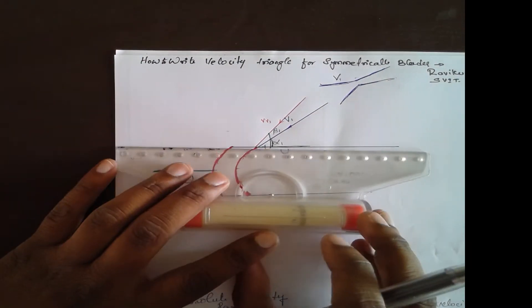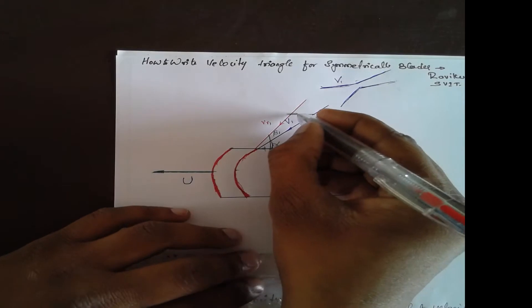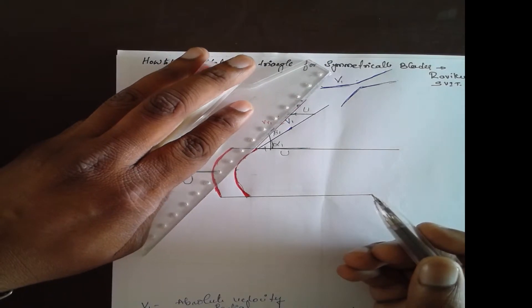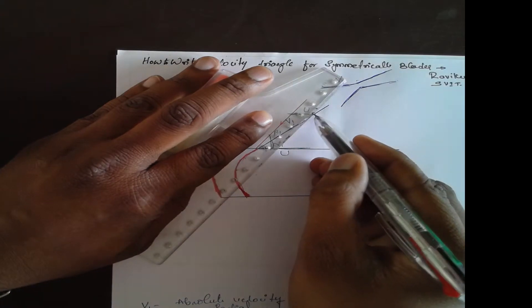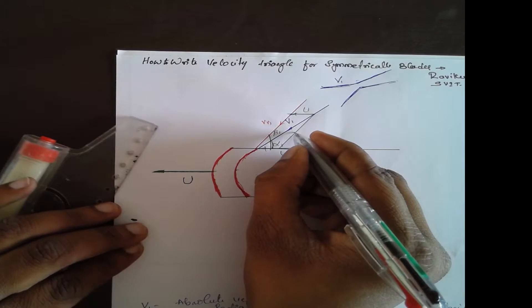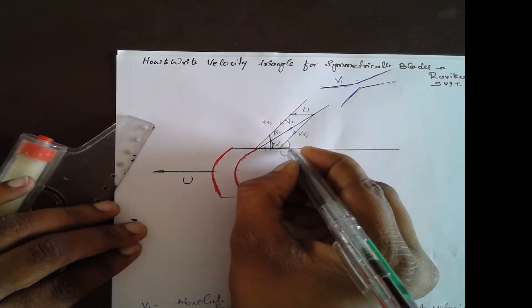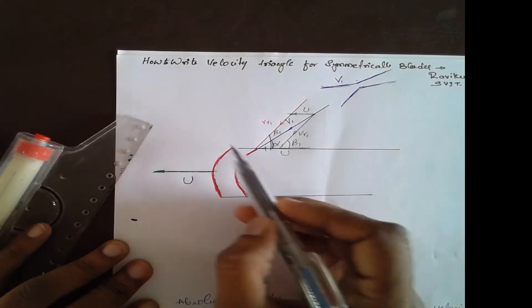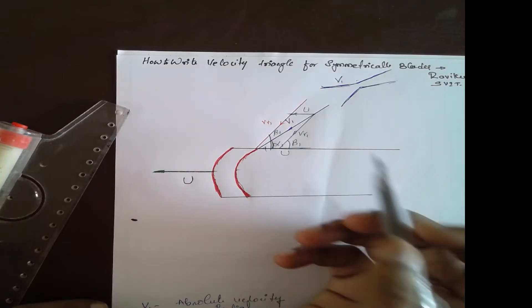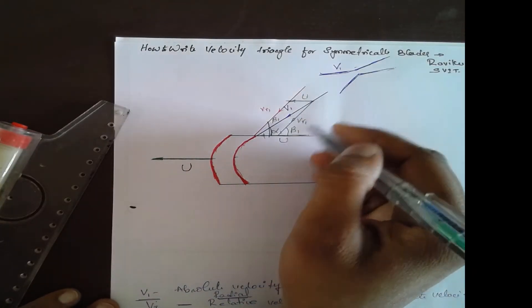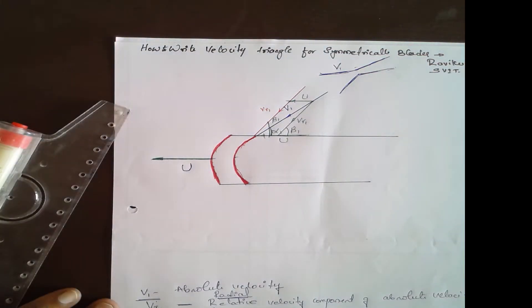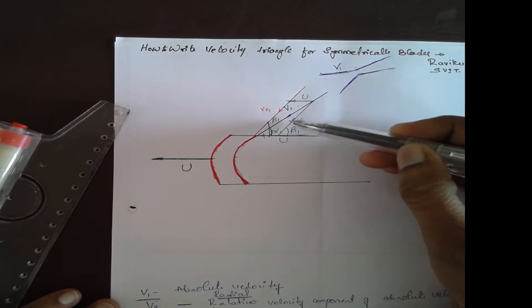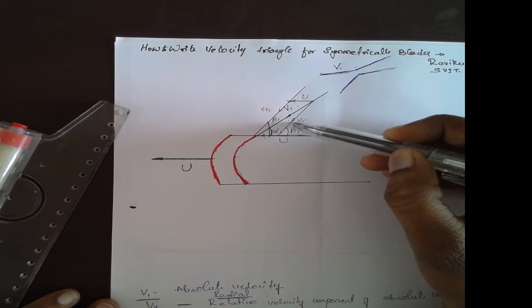To draw the inlet velocity triangle, first draw u and its parallel line. Then draw vr1 and its parallel line using the parallelogram principle. This completes the parallelogram. This gives you the inlet velocity triangle, which has an upper and a lower velocity triangle. We consider the lower velocity triangle.